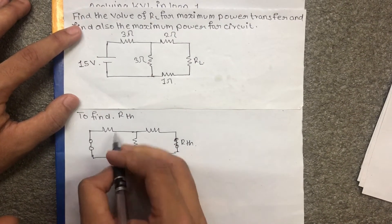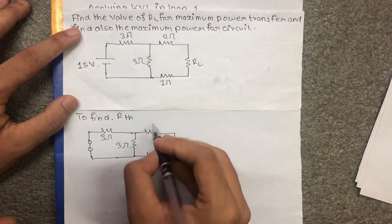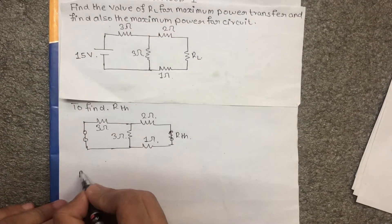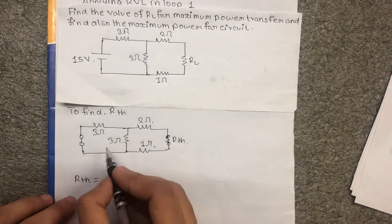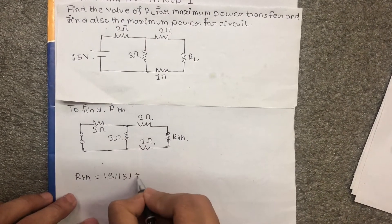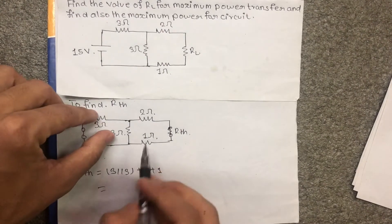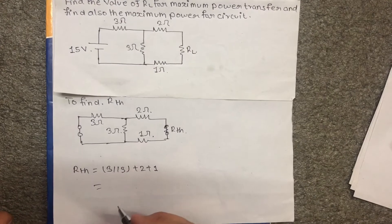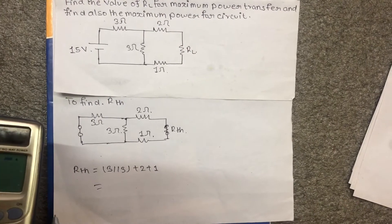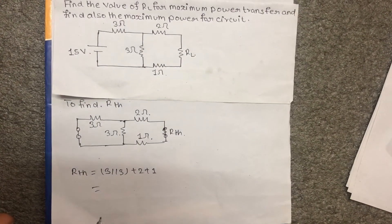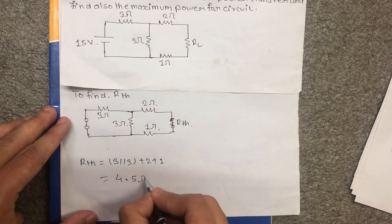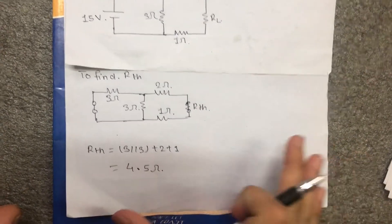For finding Rth: the circuit has 3 ohm, 3 ohm, and 2 ohm resistors. Rth equals 3 parallel 3 plus 2, which gives 1.5 plus 2, so Rth equals 4.5 ohms. So RL should also equal 4.5 ohms for maximum power transfer.